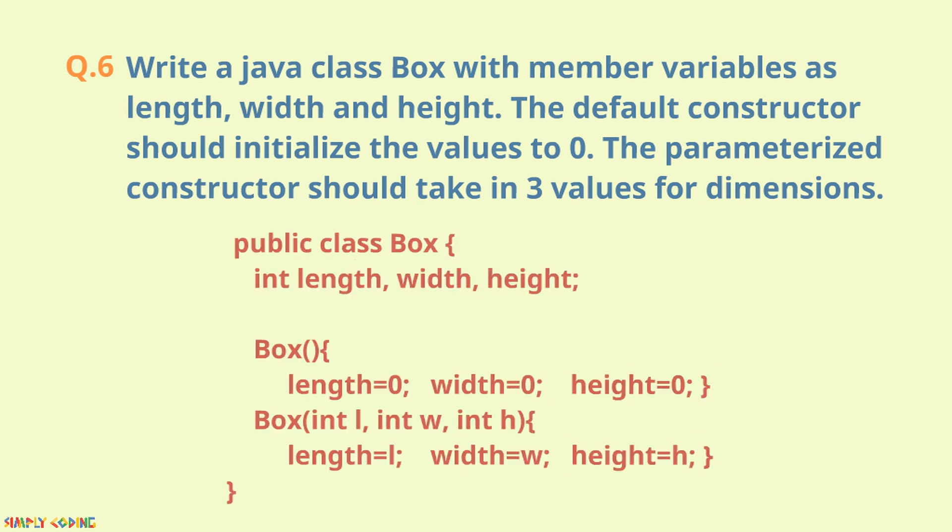Here, we would write the box class and first define the member variables. Then, we would write the default constructor which initializes the values to zero.